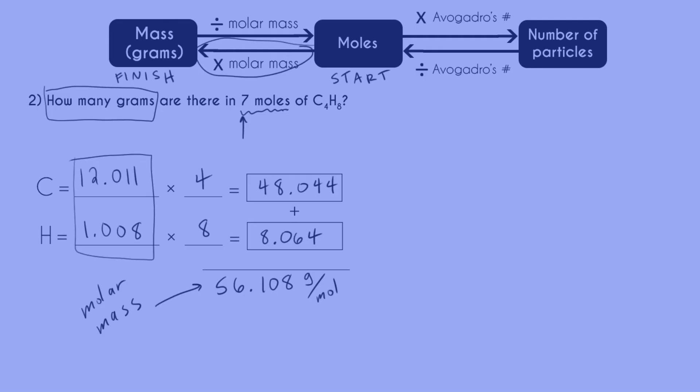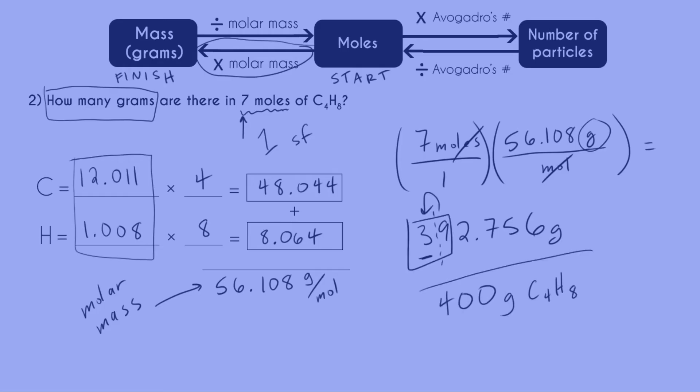And now I'm going to go ahead and do my conversion. I'm going to multiply by the molar mass. Grams is on top, moles is on bottom. Canceling out moles, I can see I'm going to end up in grams. That's what I want. I get 392.756 grams. But remember, I only have one sig fig. So I'm limited to 400 with no decimal point grams of C4H8.